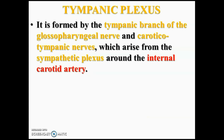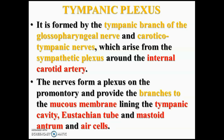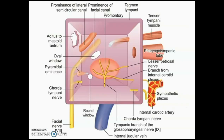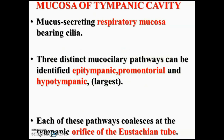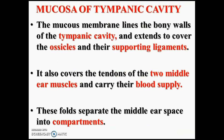Coming to the tympanic plexus: it is formed by the tympanic branch of the glossopharyngeal nerve and the caroticotympanic nerve coming from the sympathetic plexus. These branches from the tympanic plexus supply the mucous membrane of the tympanic cavity, Eustachian tube, mastoid antrum, and mastoid air cells. The tympanic plexus is formed over the promontory in the middle of the tympanic cavity. The plexus also gives branches to join the greater superficial petrosal nerve and lesser superficial petrosal nerve, which contain parasympathetic fibres. The mucosa of the tympanic cavity is respiratory mucosa with cilia, and there are three distinct mucosal pathways: epitympanic, promontory, and hypotympanic — all ending near the tympanic orifice of the Eustachian tube.